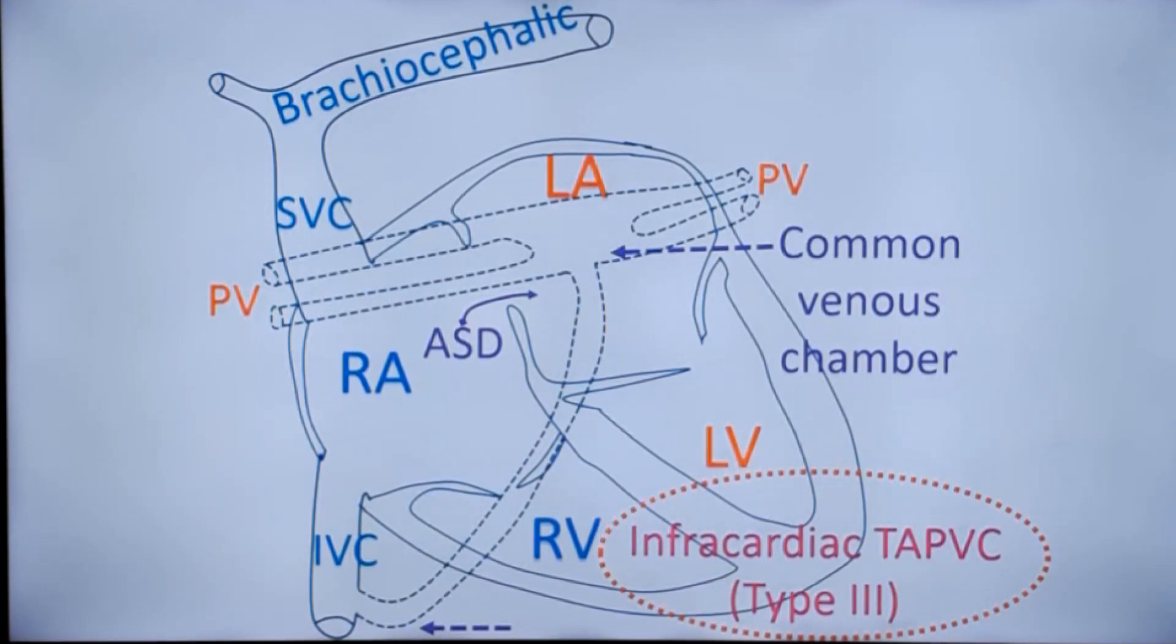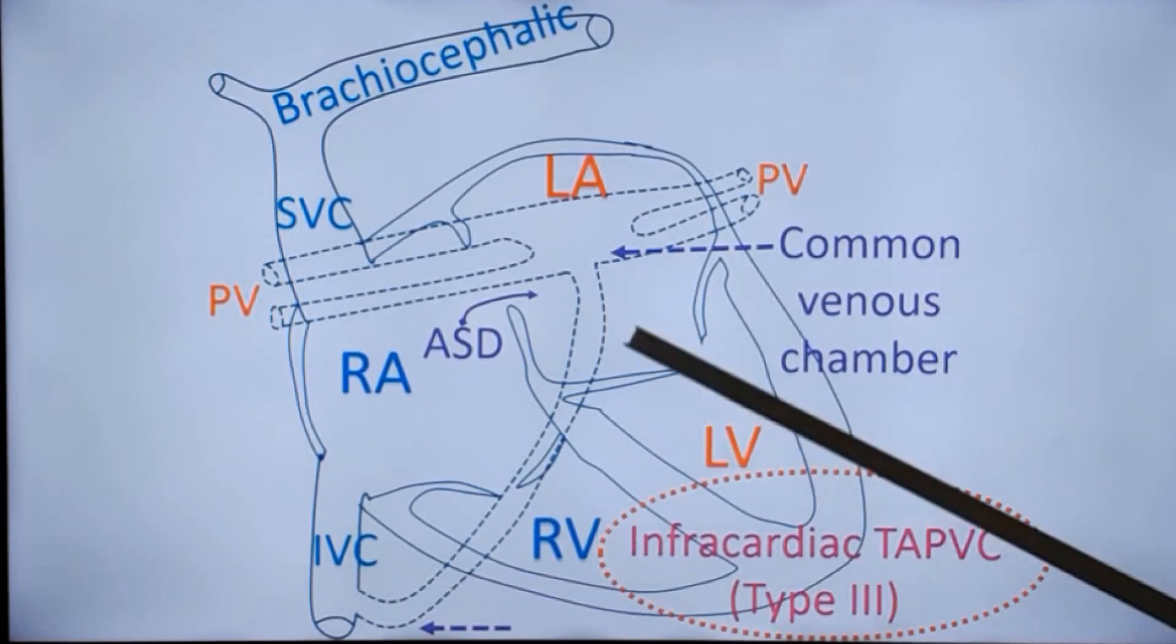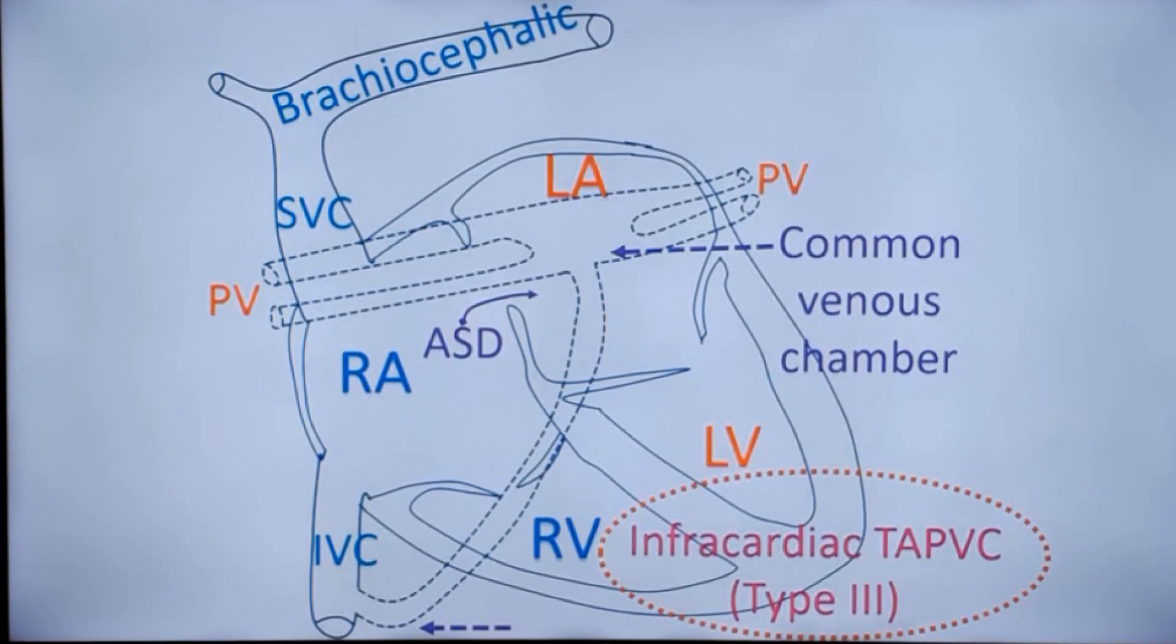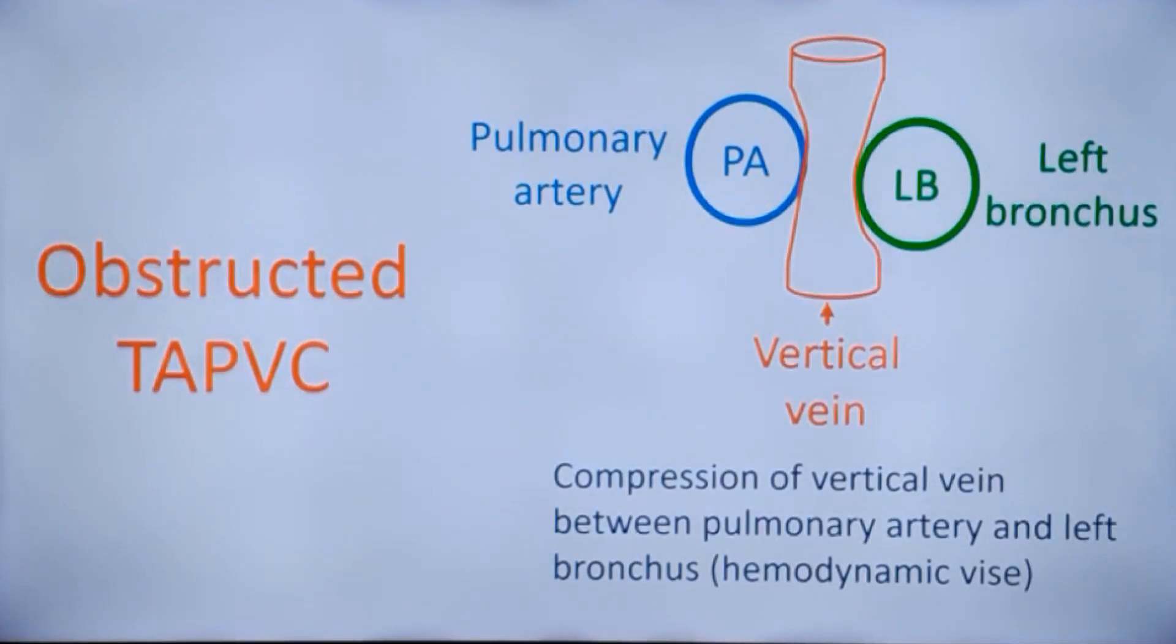They usually present with pulmonary edema very early in life. So this is a very dangerous situation, more dangerous than the other two types, because the circuit is intrinsically obstructive. When pulmonary veins are obstructed, the natural sequence is pulmonary edema.